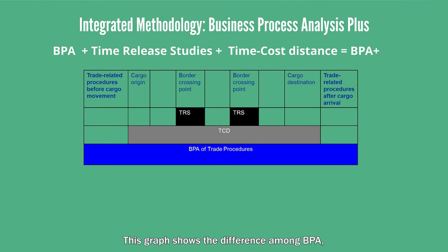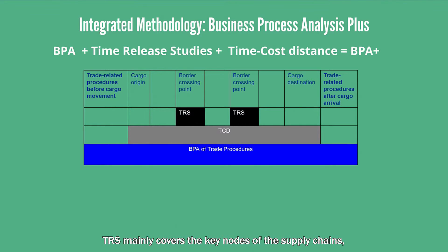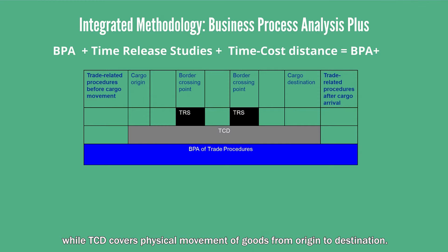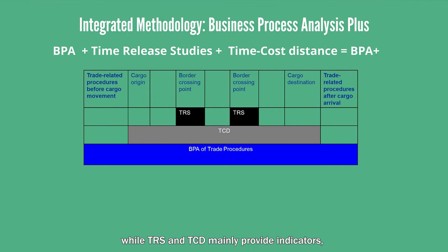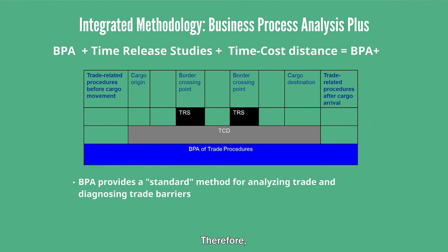This graph shows the difference among BPA, TRS, and TCD method. BPA can cover the whole trade process before and after the physical movement of goods. TRS mainly covers the key nodes of the supply chain, such as port, airport, and land border, while TCD covers the physical movement of goods from origin to destination. While TRS and TCD mainly provide indicators, BPA provides not only indicators but also standard methods for analyzing trade and transport procedures. Therefore, BPA Plus draws on the strengths of these three methods.